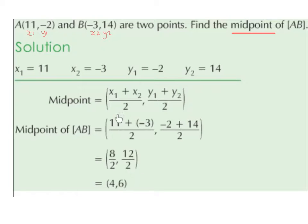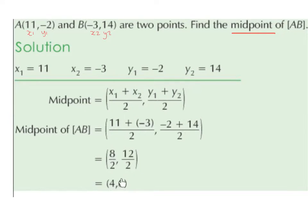So 11 plus minus 3 is the same thing as 11 minus 3, and 11 minus 3 is 8. So I have 8 over 2, comma, and minus 2 plus 14 is 12, so 12 over 2. And 8 divided by 2 is 4, and 12 divided by 2 is 6. So the midpoint of AB is the point (4, 6).